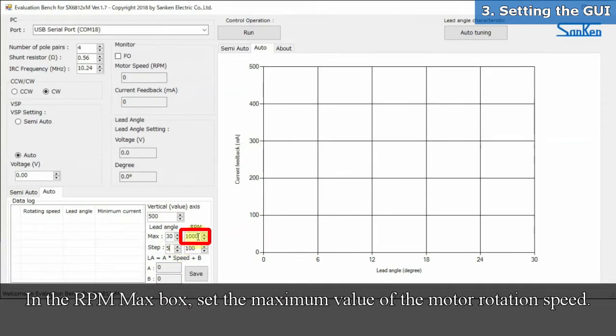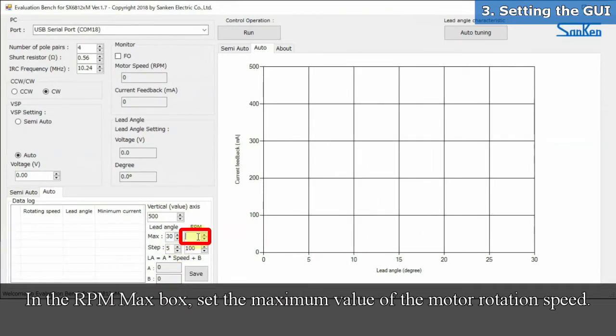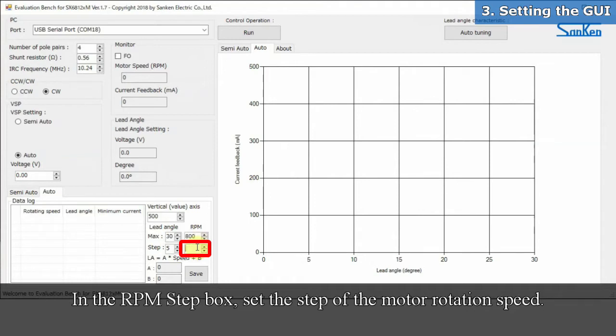In the RPM max box, set the maximum value of the motor rotation speed. In the RPM step box, set the step of the motor rotation speed.